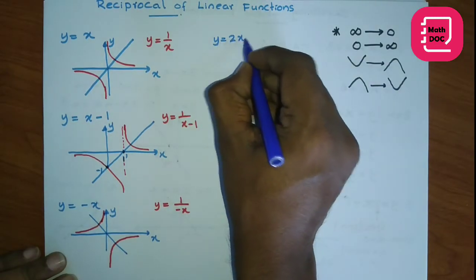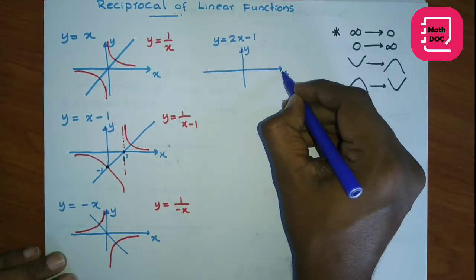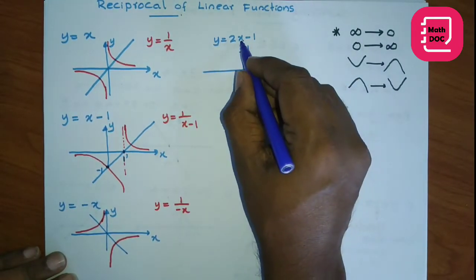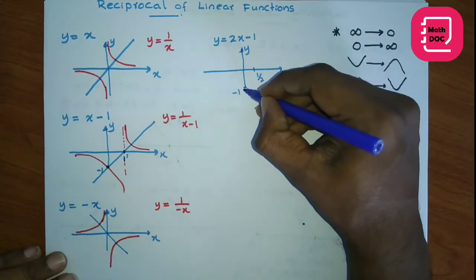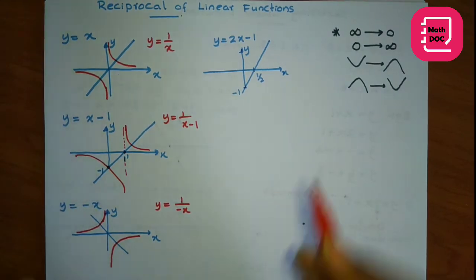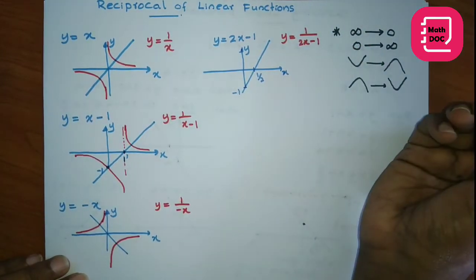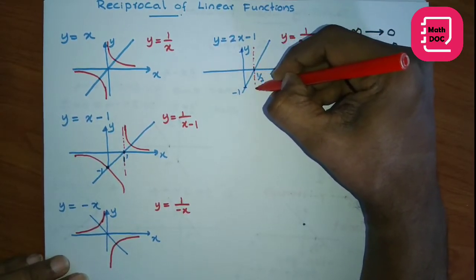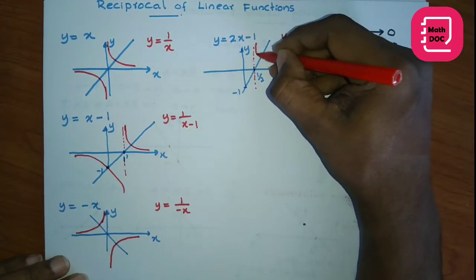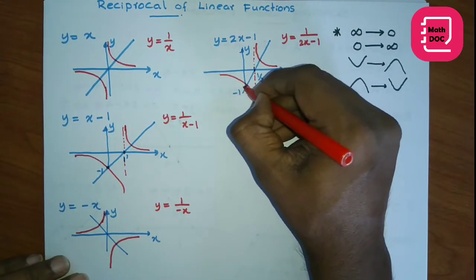Now consider y equal to 2x minus 1. On the x-axis and y-axis: when y equals 0, x value is one half; when x equals 0, y value is minus 1. Now let's get the reciprocal: y equal to 1 over 2x minus 1. Take the x-intercept as the asymptote. In the positive region it moves like this, and for this region it moves like this. Here this intercept will be minus 1.